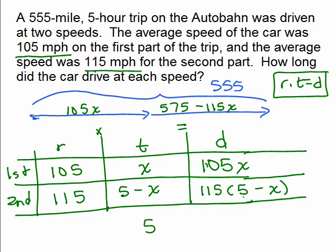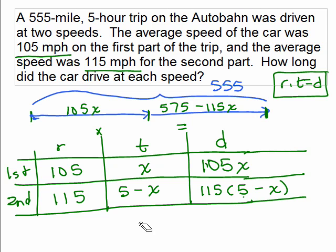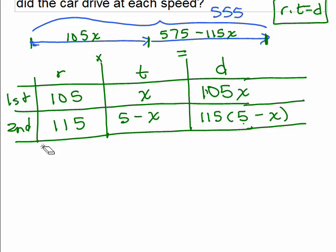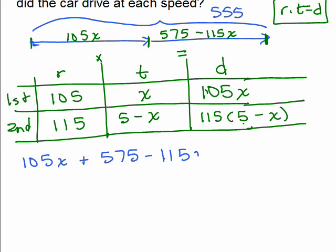So from the picture, this piece, that distance plus the second distance here has to add up to 555. So that's the formula, I'm sorry, that's the equation we're going to write, 105x plus 575 minus 115x equals 555.